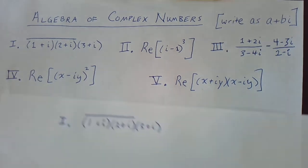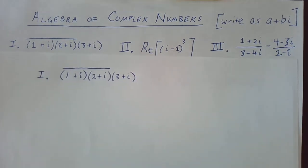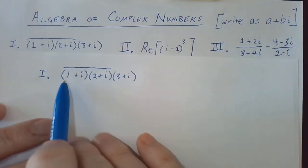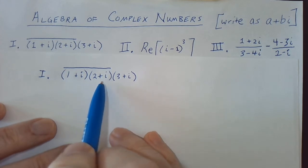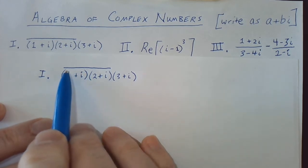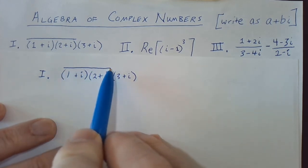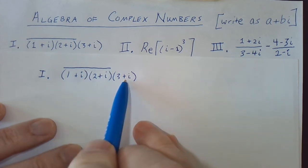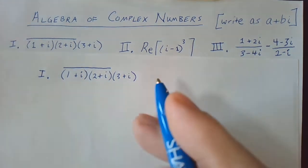Let's start with the first one. We have 1 plus i times 2 plus i, and then we take the complex conjugate of that product and multiply it by 3 plus i.